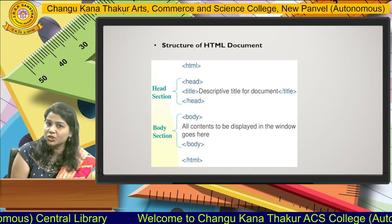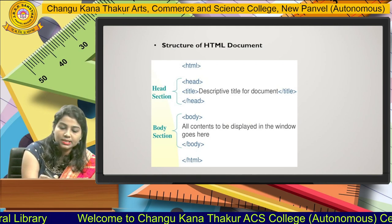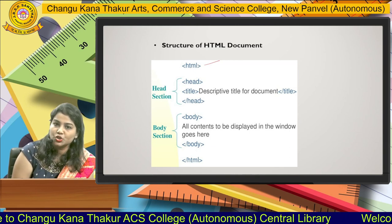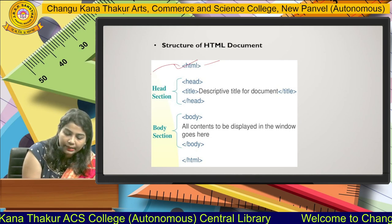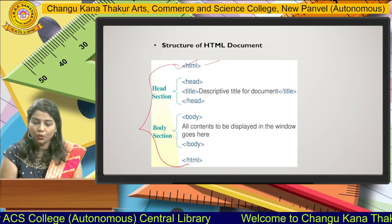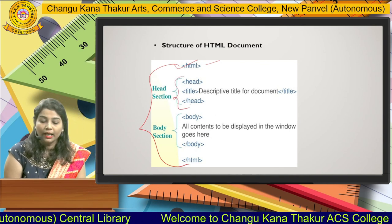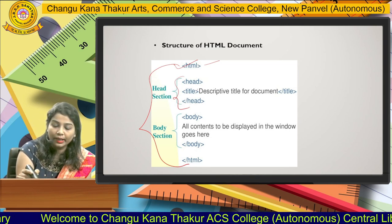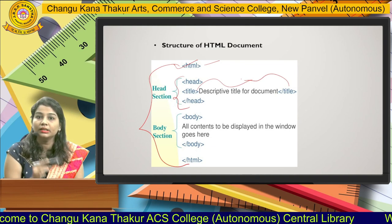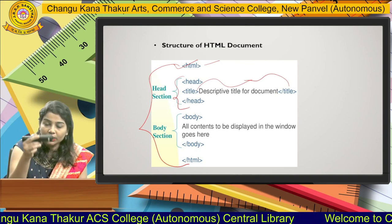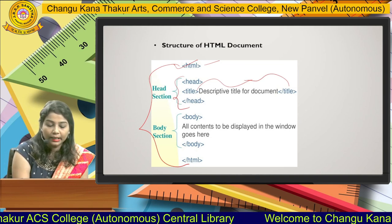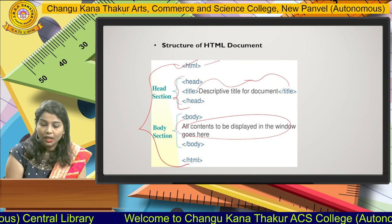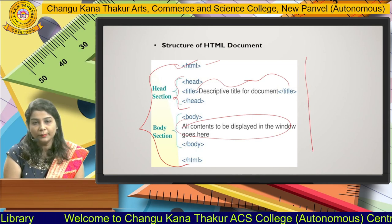Now we will move forward to the HTML document structure. The structure is: html — head — title — close head — body section — close body — close html. The html tag is the main part of your HTML document. Under html, you have the head tag, which is also a pair tag. Inside the head tag, you enclose the title tag, which gives the title of your web page. Whatever contents you need to display on the web page are included in the body tag, which is also a pair tag. This is the skeleton or structure of your HTML.